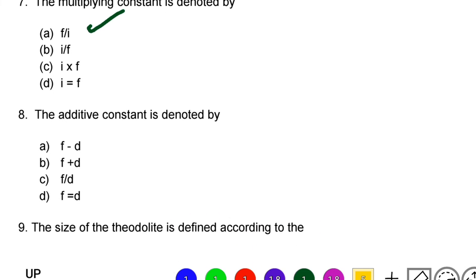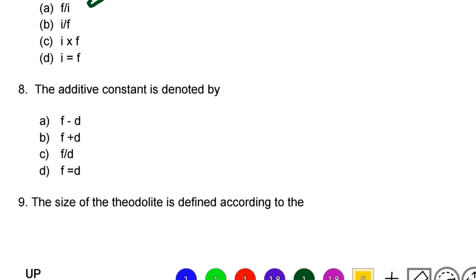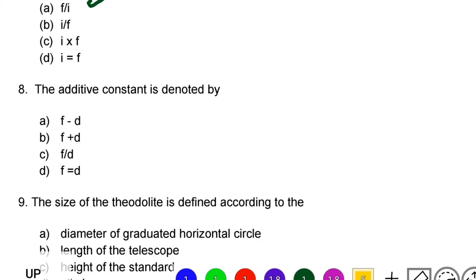Next question: the additive constant is denoted by — option A: F minus D, option B: F plus D, option C: F divided by D, option D: F equals D. The correct answer is option B, F plus D.